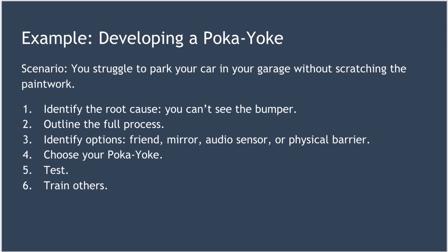Step two is to outline the full process. That looks something like this: you drive home, arrive in the driveway, stop the car and open the garage door. Then you drive the car into the garage close enough to the wall so the garage door can close behind you, but you basically have to guess that the car is in the right position. Step three: identify your options. Some ideas include having a friend help you park, placing a mirror in the garage so you can see the front of the car, or using some kind of audio sensor to detect the car's position.